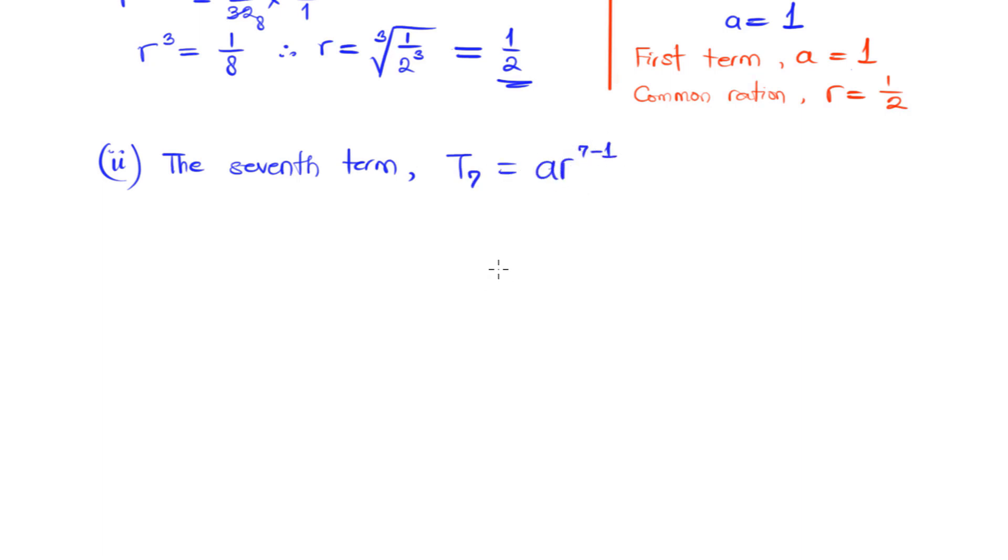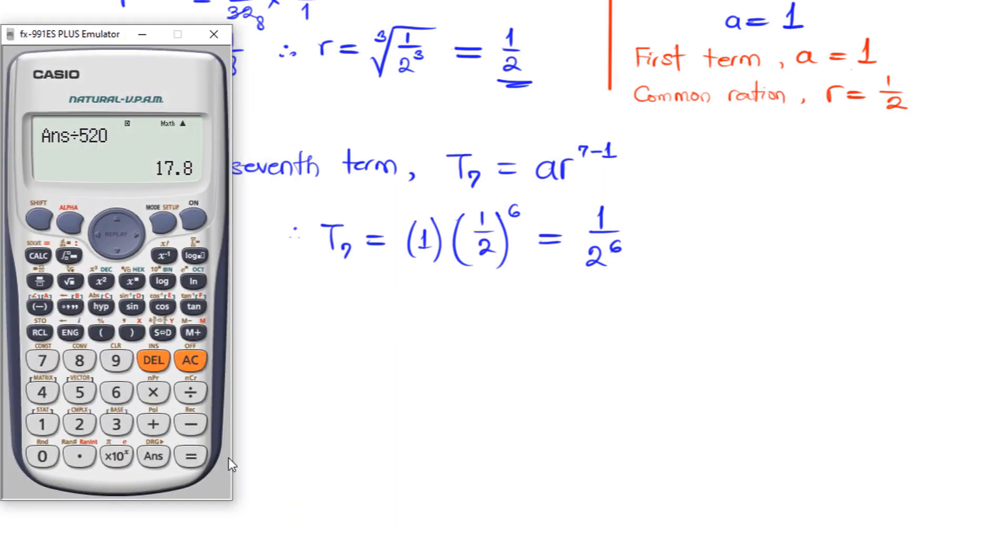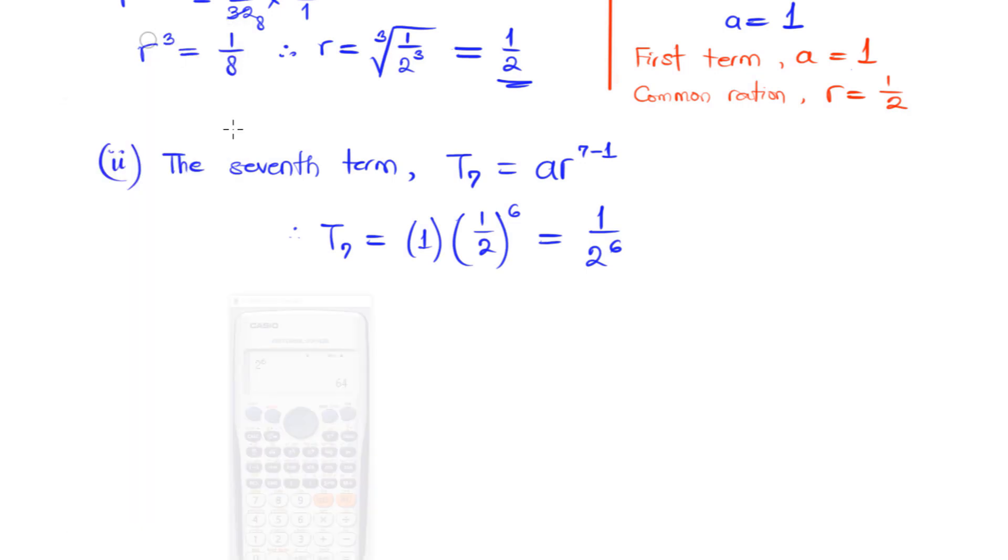7 in the place of n, then we know our first term A and the common ratio R, such that T_7 will be 1 times 1/2 raised to power 7 minus 1, which is 6. So that's raised to power 6. This is 1/2 raised to power 6. 2 raised to power 6 is 64. So the seventh term for this geometric progression is 1/64, and that is all there is to this question.